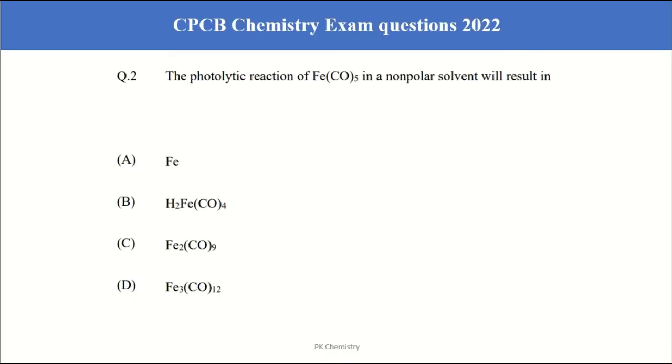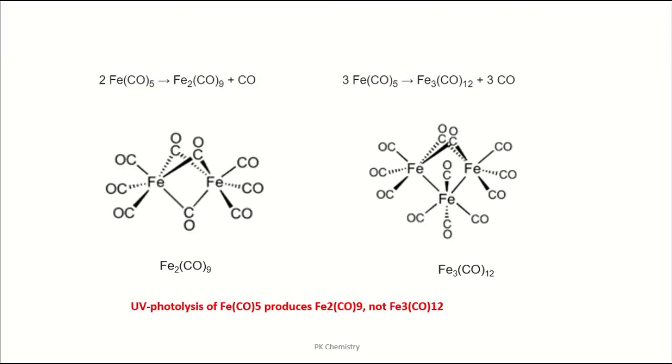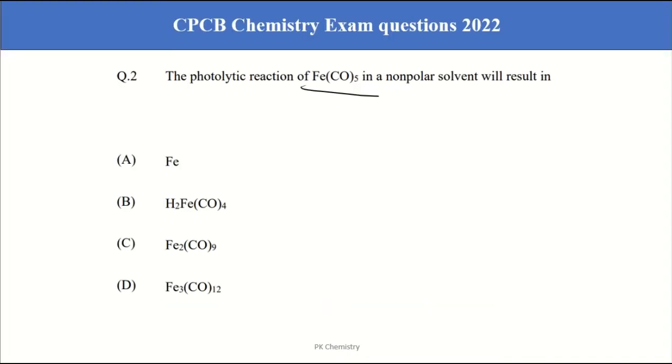Move on to the second question. The photolytic reaction of Fe(CO)5. So there are two reactions. One is photochemical reaction. Another one is thermal reaction. Photo reaction Fe(CO)5 gives the Fe2(CO)9. But in the case of thermal, it gives the Fe3(CO)12. Our correct answer is Fe2(CO)9. C is the correct answer.